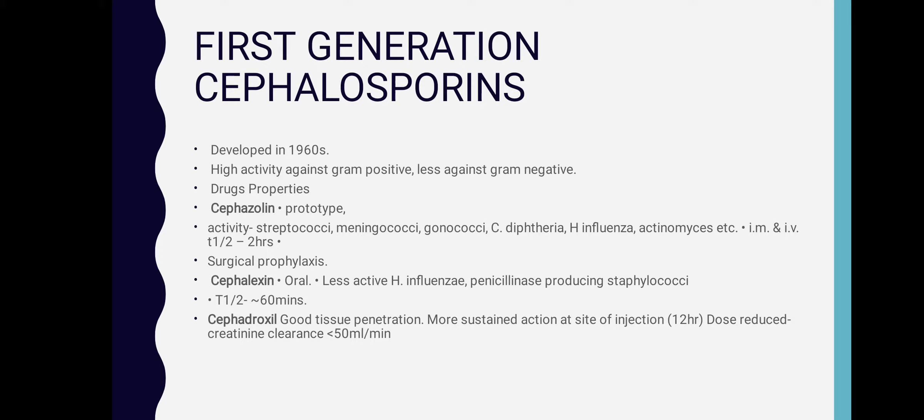Cefazolin is the prototype of first generation and has activity against streptococci and meningococci. It has a half-life of two hours and is used in surgical prophylaxis. Cephalexin is given orally, is less active against H. influenzae and penicillinase-producing streptococci, and has a half-life of approximately 60 minutes. Cefadroxil has good tissue penetration and more sustained action at the site of infection.